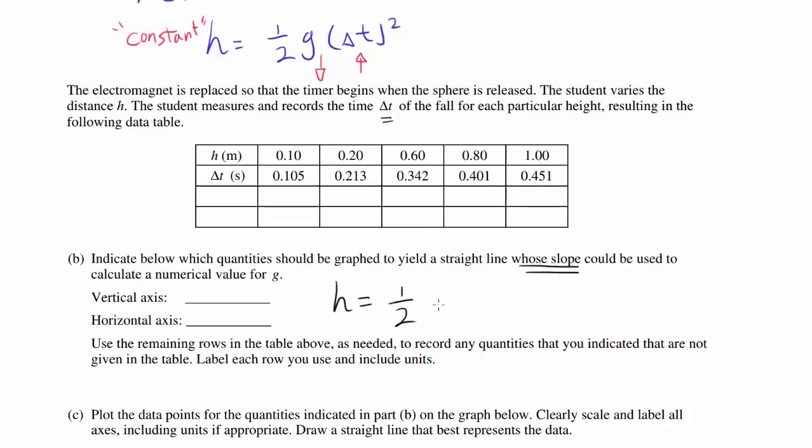We know that H = 1/2 g t squared, or g times 1/2 t squared. Think of it as y equals the slope times x. We can let our vertical axis be the height H measured in meters, and the horizontal axis be 1/2 delta t squared measured in seconds squared.